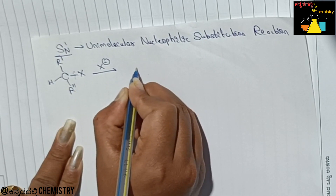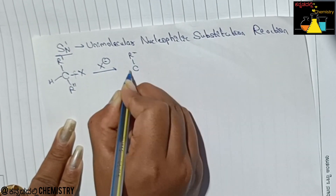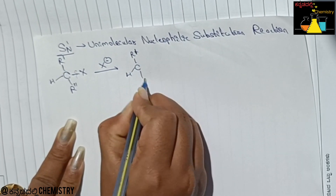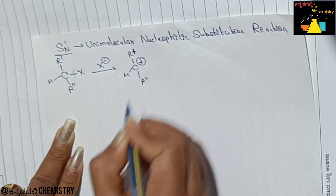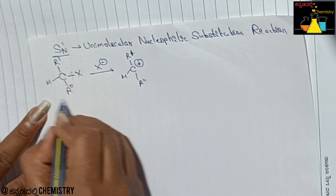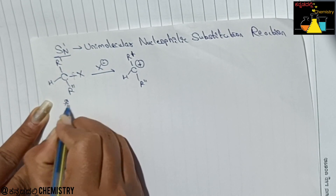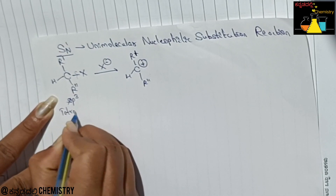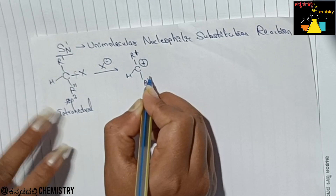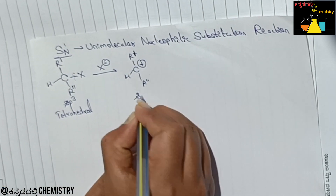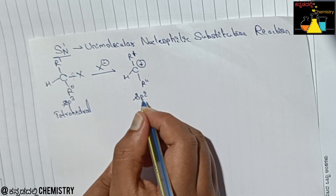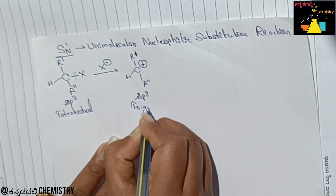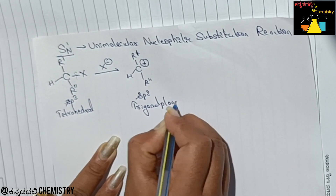In SN1, the C-X bond breaks to form a carbocation intermediate — R, R-dash, R-double-dash. The carbocation formation changes hybridization from sp3 with tetrahedral geometry to sp2 with trigonal planar geometry.